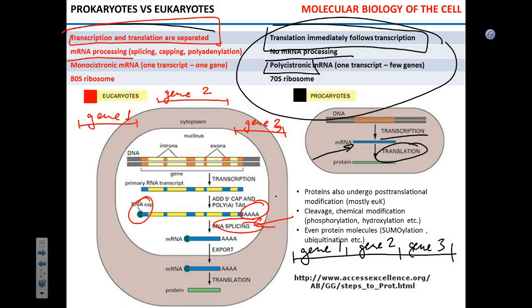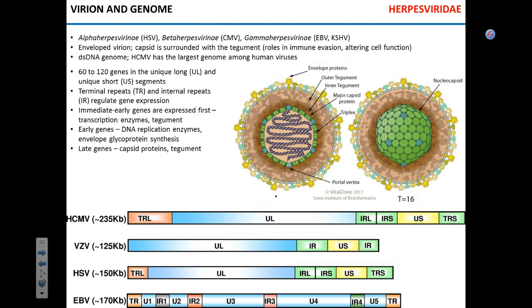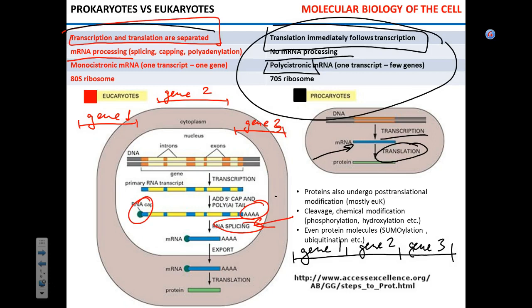In eukaryotes each gene has its own transcript; in prokaryotes it's one large polycistronic transcript that contains multiple genes. Someone asked which is more likely to have errors in the whole process — actually both are pretty error-prone, neither has a specific advantage in that regard.